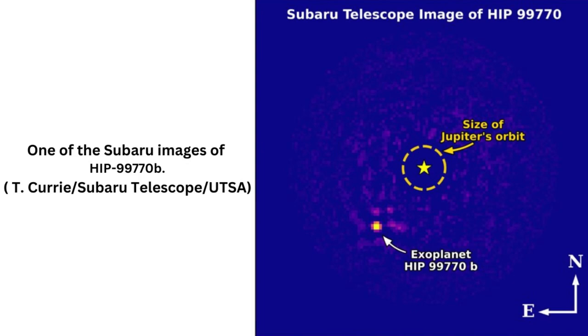HIP-99770b is an exoplanet between 14 and 16 times the mass and 1.05 times the radius of Jupiter, orbiting a star twice the mass of the Sun at a distance of 17 astronomical units. That's more than three times Jupiter's distance of 5 astronomical units from the Sun, and just a little closer than Uranus's 19.8 astronomical unit distance. However, it receives about the same amount of radiation Jupiter receives, because the star HIP-99770 is so much brighter than our Sun.